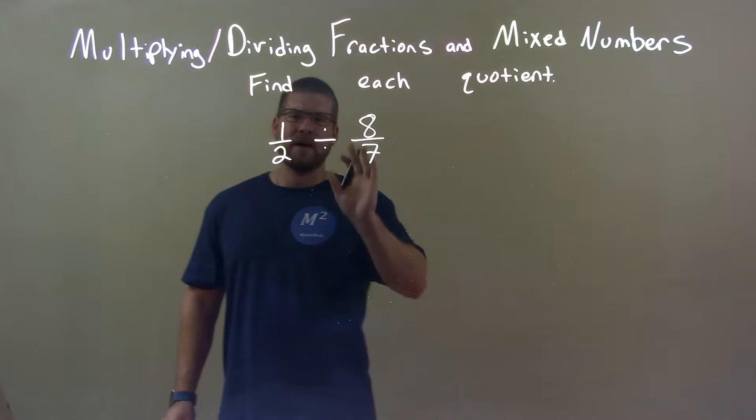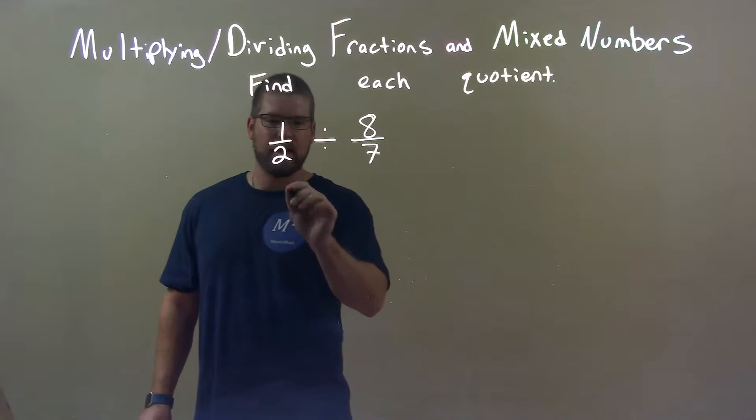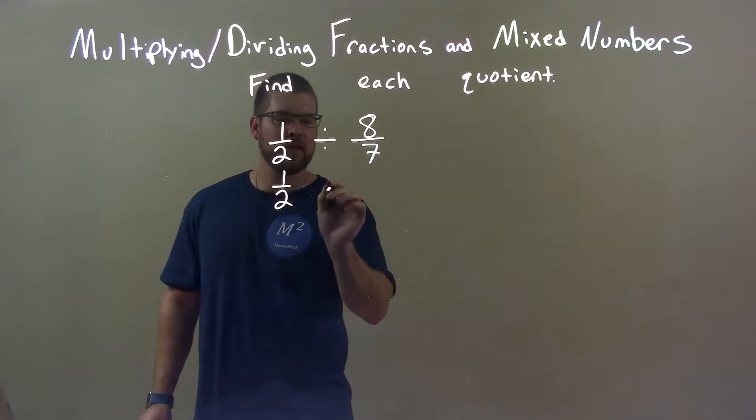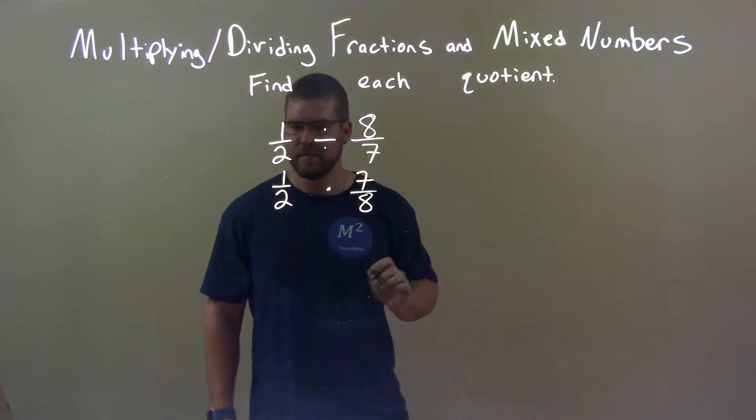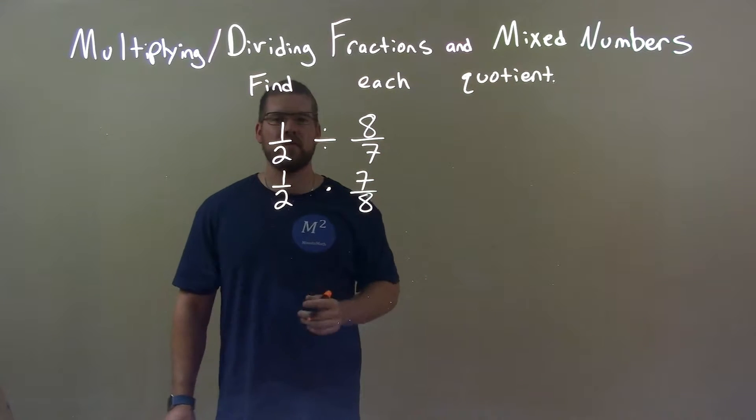Dividing by a fraction, I don't like to do. I like to multiply. So one-half, I convert this to be multiplication. Instead of dividing eight over seven, multiplying seven over eight. So now we have one-half times seven over eight.